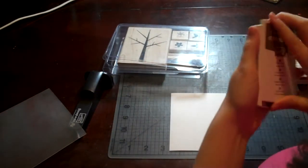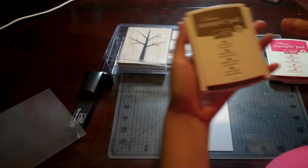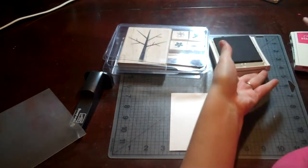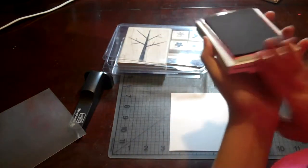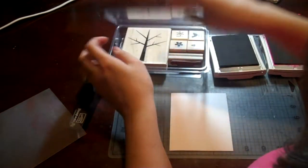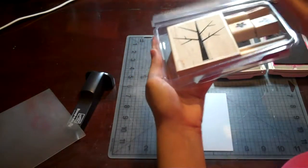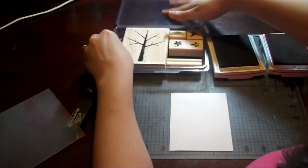So let me show you. I've got some Soft Suede Classic ink and Melon Mambo Classic ink pad. This stamp set is called Season of Friendship, and it's one of my favorite ones. We're going to use this one.